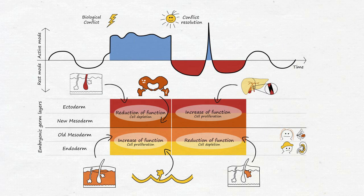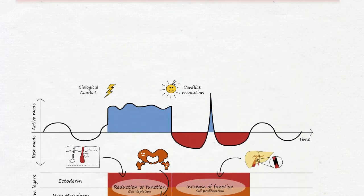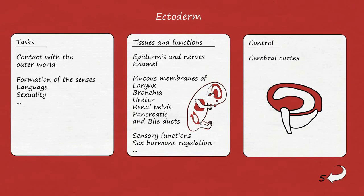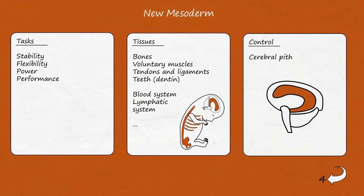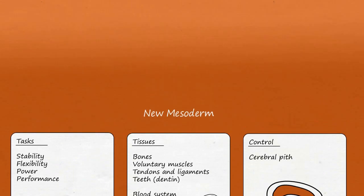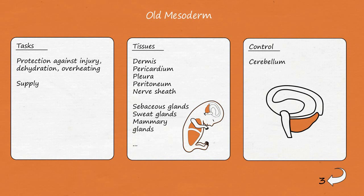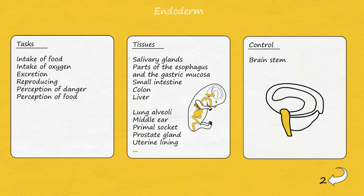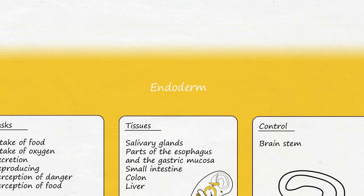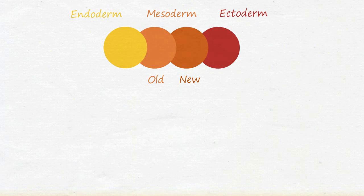By knowing the tissue affiliation to the embryonic germ layer and their behavior in the context of the biphasic nature of the SBS, Dr. Hamer has shown in the third biological law of nature that every physical symptom can be broken down exactly if the symptoms have been accurately ascertained. And so, the triggering situation in the life of the person can be found and examined.